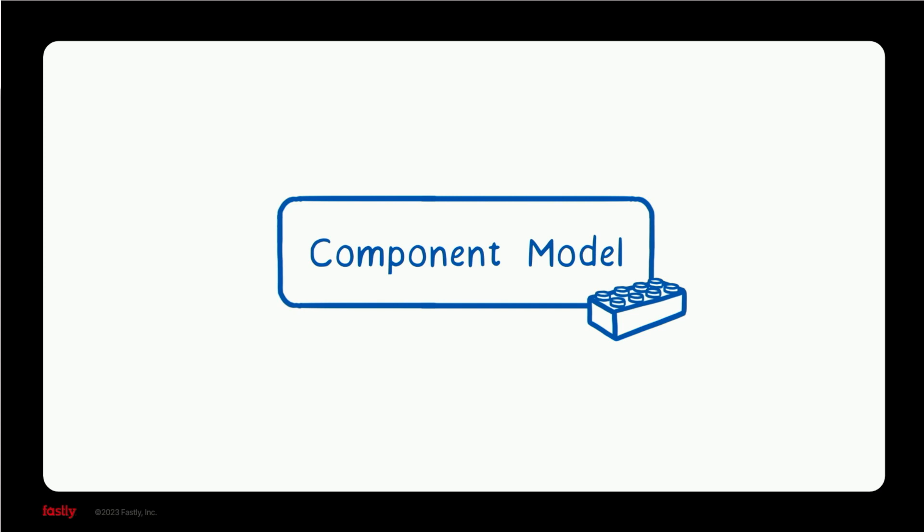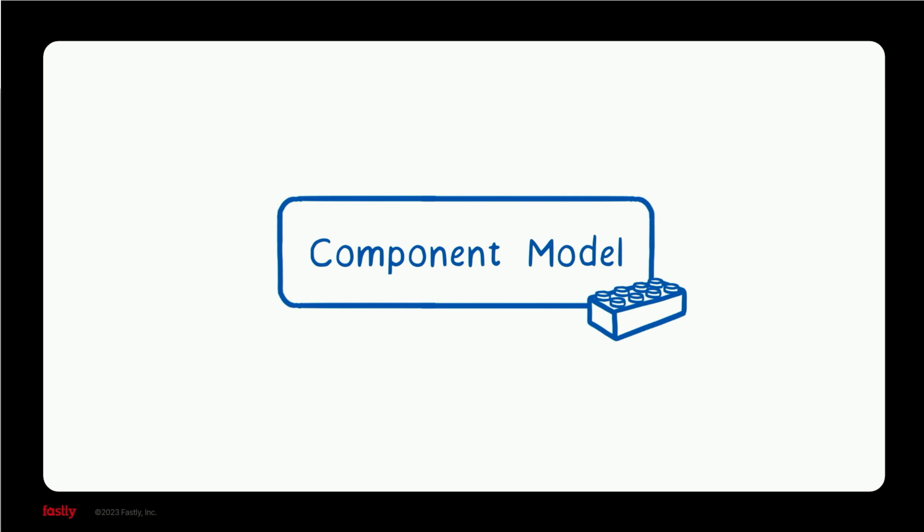But in contrast with those ecosystems, each component can be written in a different language and has its own sandbox surrounding it, so that malicious or vulnerable code doesn't have access to the security-critical parts of your application. But this is all still super fast. The communication between these components is faster than HTTP, even faster than IPC. It's almost as fast as a regular function call.